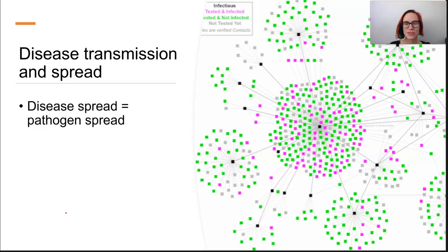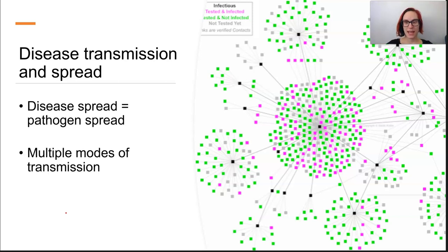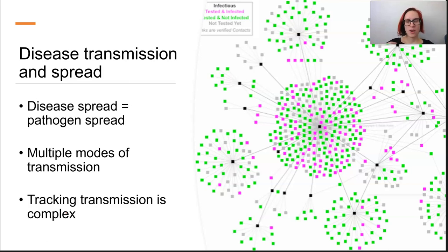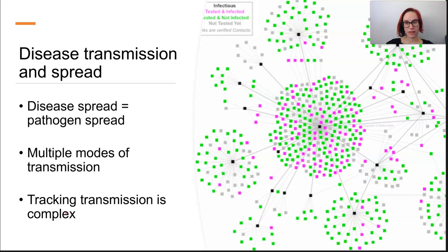When we're talking about disease transmission and spread, we're really talking about the pathogen spreading. There are so many methods of spread, including direct contact, person-to-person, droplets, airborne, and all those types of things. These are complicated by the number and types of people being infected, and transmission tracking is incredibly complex and layered because it's affected by so many different things.